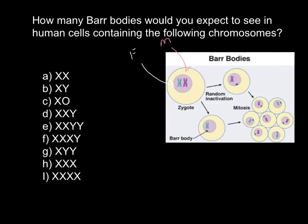As long as the zygote starts to divide through the process of mitosis, one of the X chromosomes would be inactivated. As you see, this process is random.